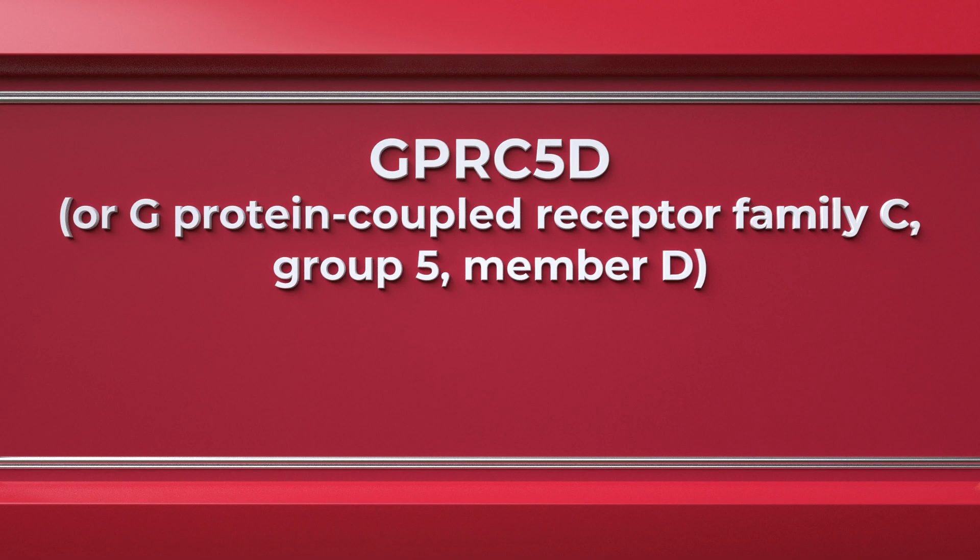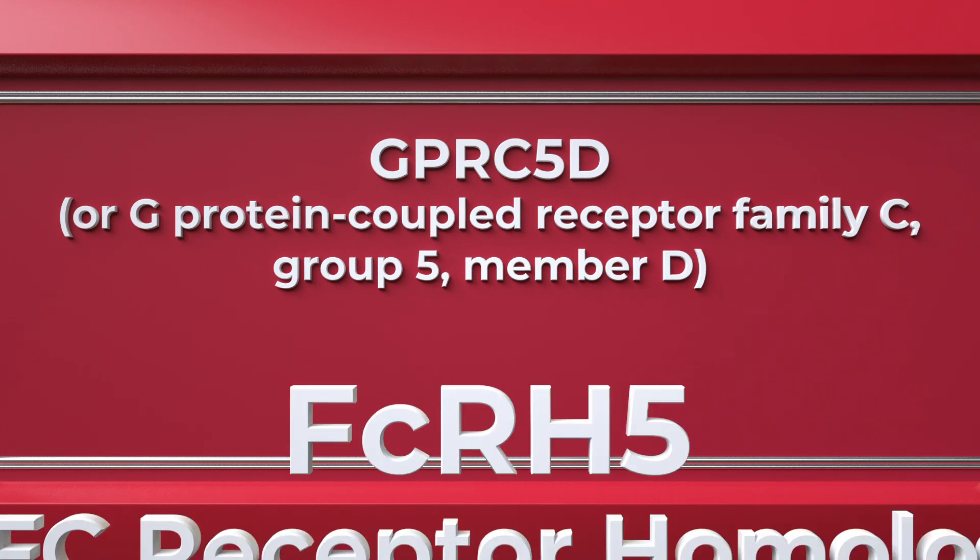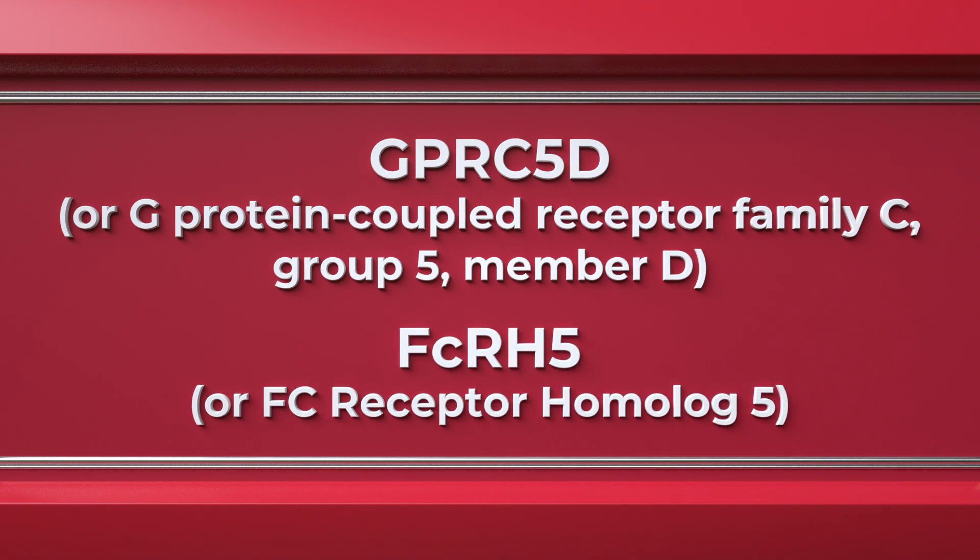As we learn more about the biology of myeloma, we have discovered different targets on the myeloma cells that could be used to diversify the way we use bispecific antibodies to target myeloma. The two most recently added antigens on the myeloma surface are GPRC5D, or G-protein coupled receptor family C group 5 member D, and FCRH5, or FC receptor homolog 5. These antigens are both heavily expressed on myeloma cells, which means they can serve as a handle or a target for myeloma drugs. Thankfully, they are not expressed on many other tissues, which reduces the risk of complications if those cells are affected by the bispecific antibody.